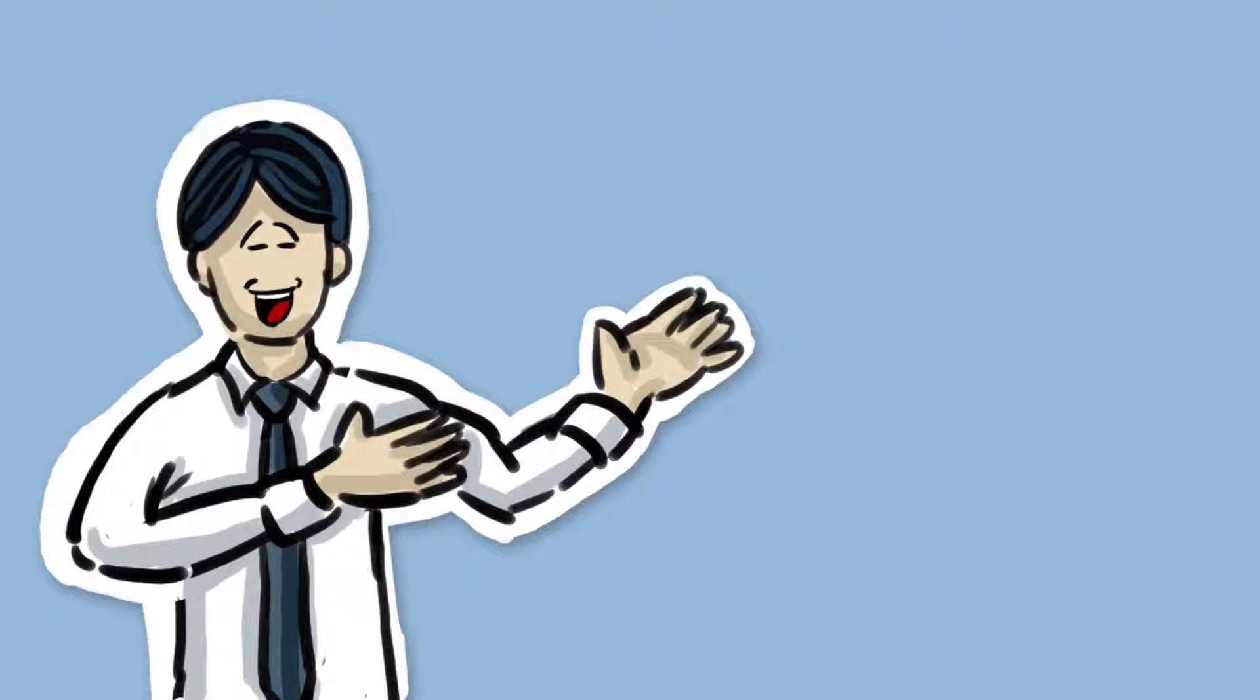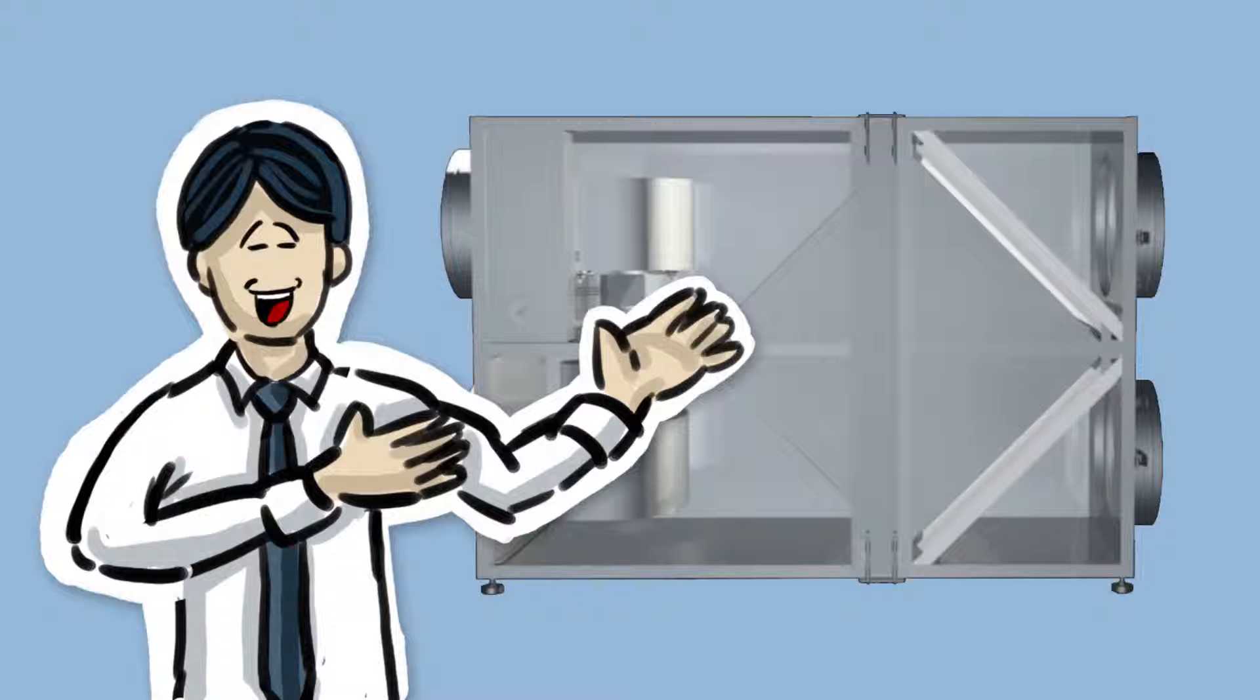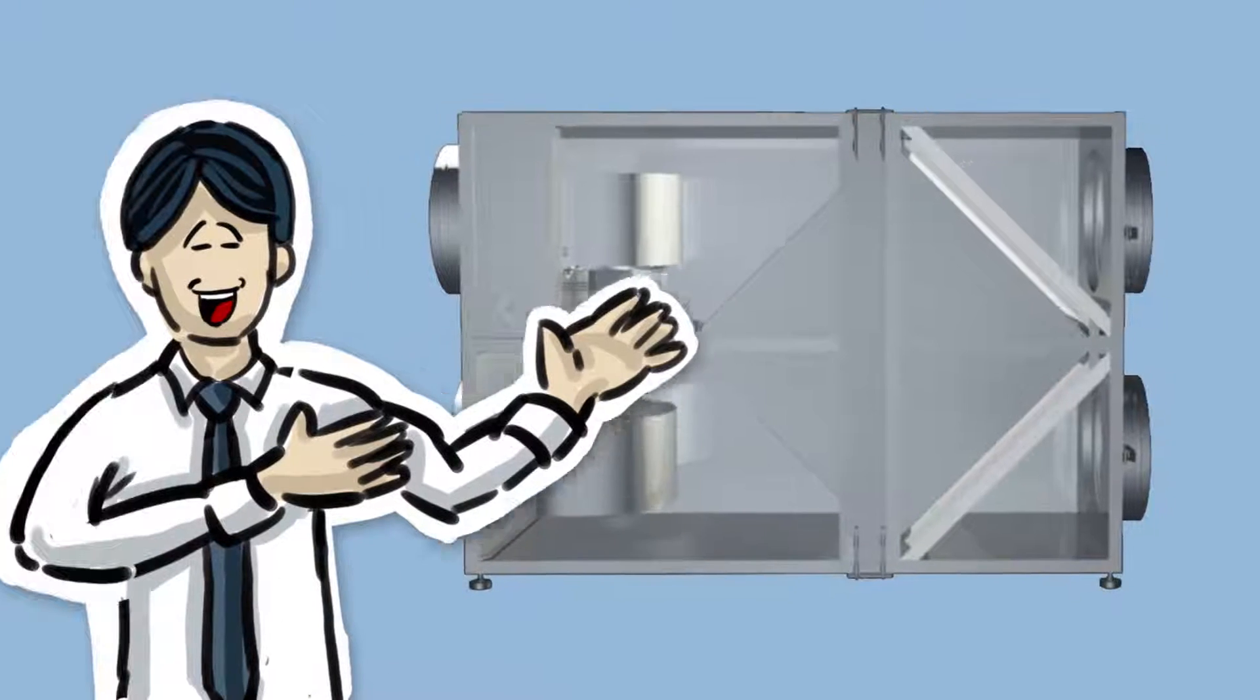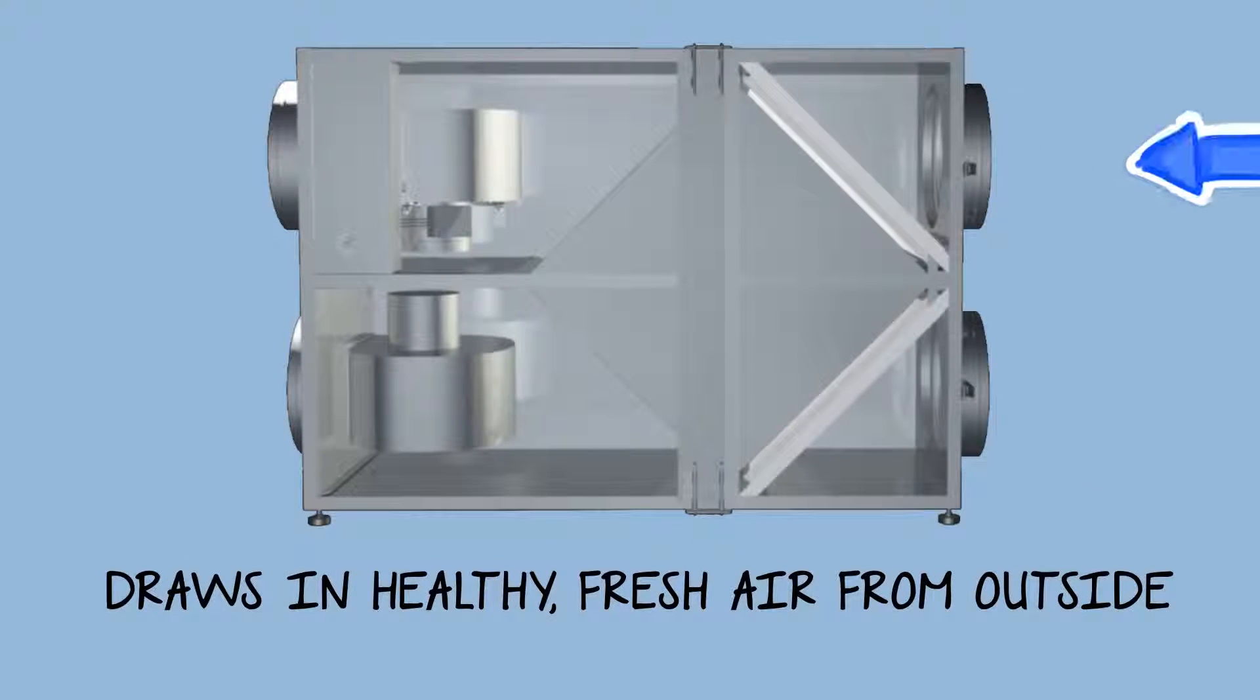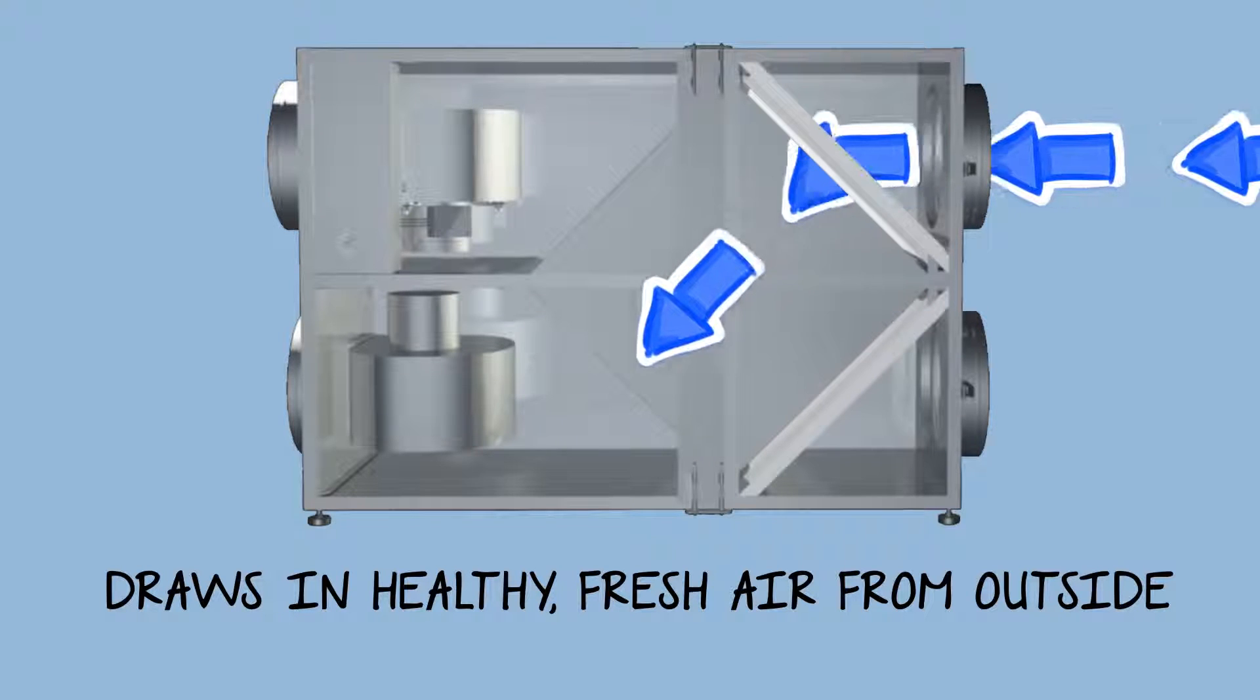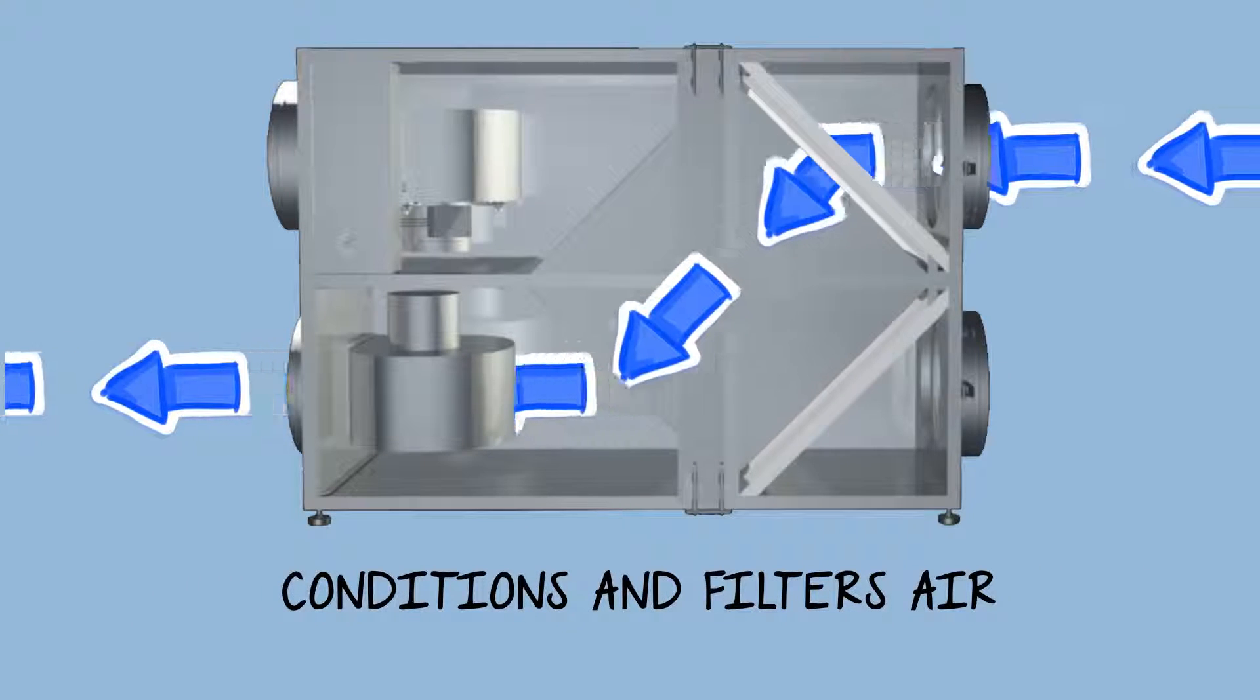Your local authorized dealer installs the Breathe Easy ERV near your home's air handler or furnace. The system will then draw in healthier, fresh air from outside the home, which it will effectively condition and filter before it circulates the new air throughout your home.